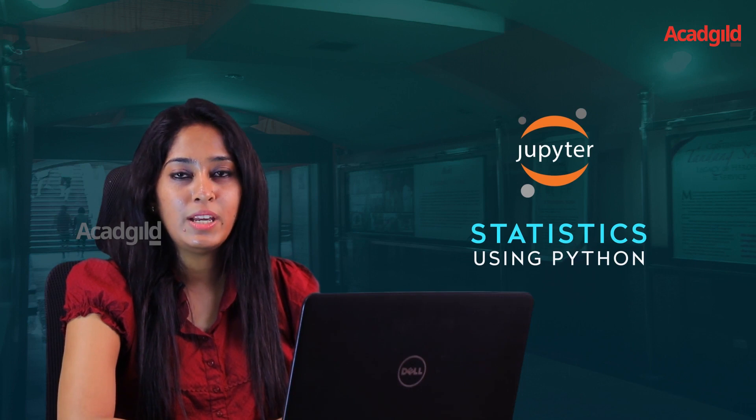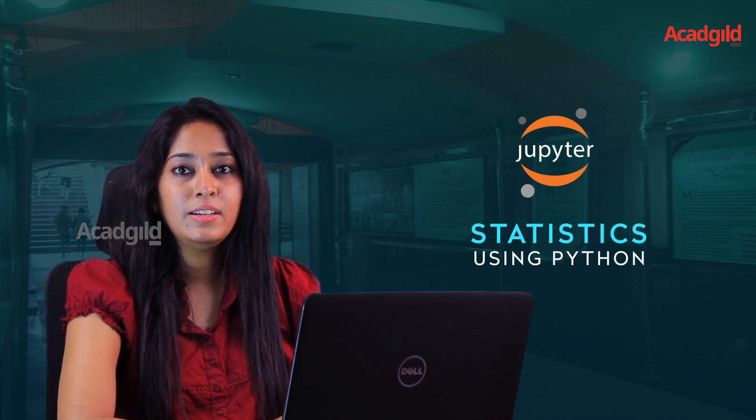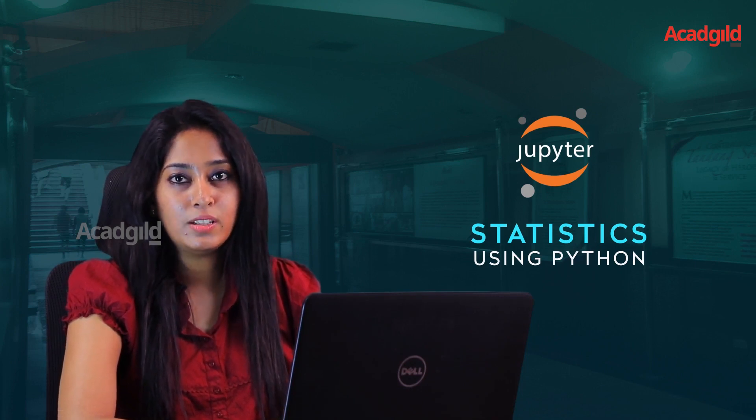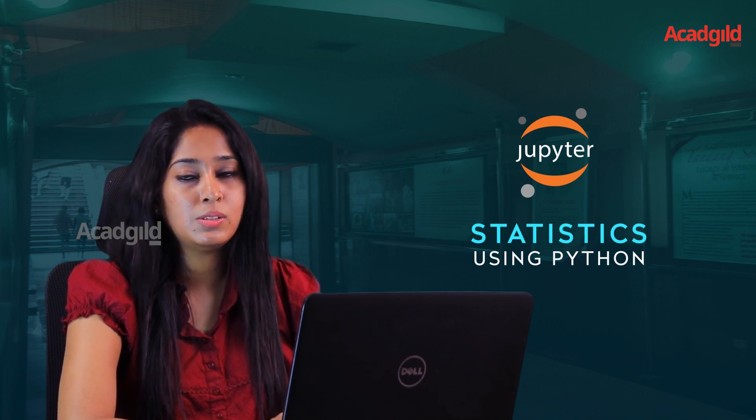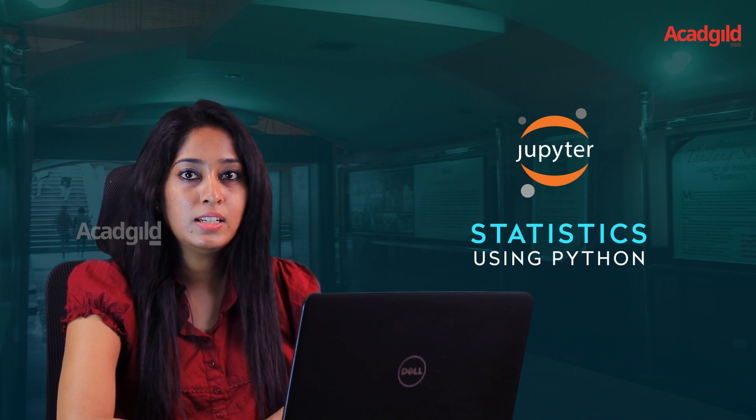The final subtopic for today is standard deviation. Standard deviation is nothing but the square root of variance. Although variance gives us a rough idea about how the data is spread from the mean, standard deviation gives us more exact value of how this data is spread from the mean. Let us implement this on our sample and population data.